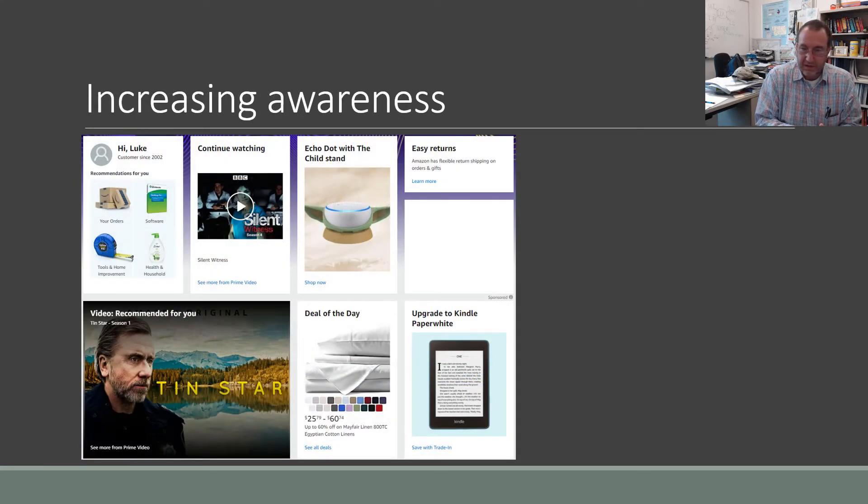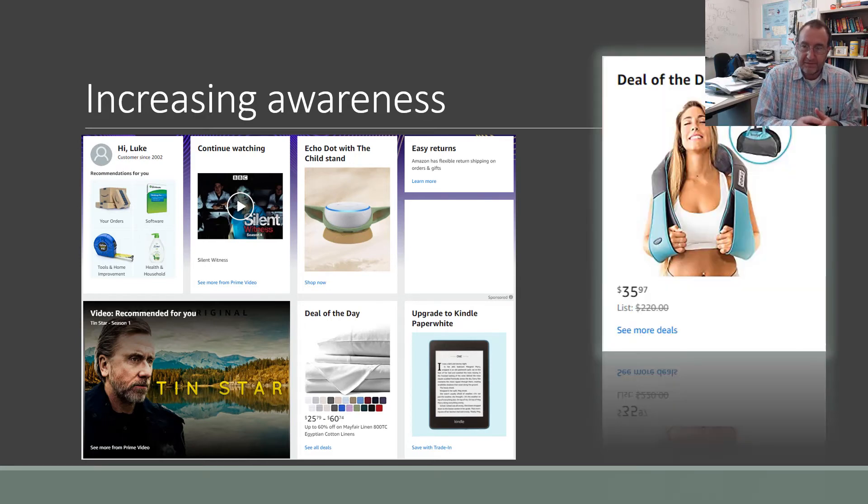You'll notice sometimes as you go to websites they have the deal of the day or if you drive past a store they'll have the little folding sandwich board that says hey this is today's special. Well here is one that Amazon showed to me at one time. We've got this relaxation shoulder thingy that also turns into a hand purse. You can see that it used to be $220 and now it's just under $36.